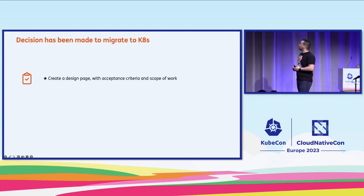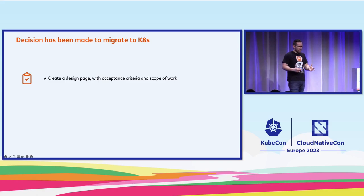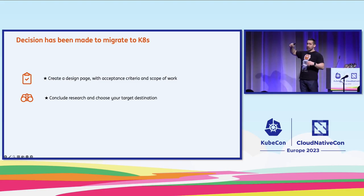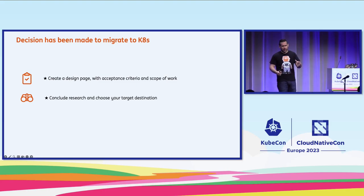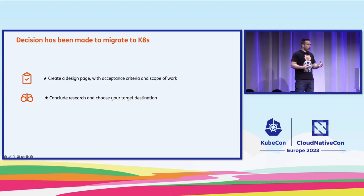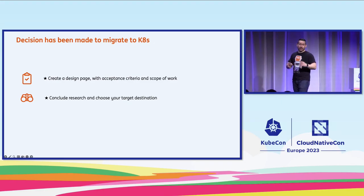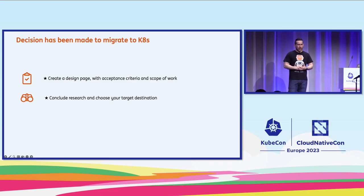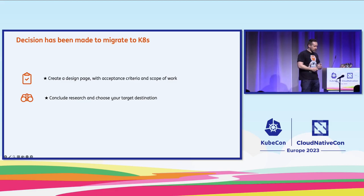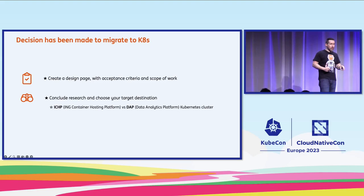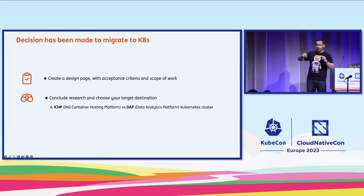Once the decision was made, it was as simple as creating a design page with acceptance criteria and scope of work — what we want, what we don't want, what can be done now, and what can wait. A big part was concluding research on where to migrate. Public cloud was still not an option, so we created an extensive Confluence page comparing both options with a pros and cons list. Options were ICHP, which we'd evaluated before, and a new option called the DAP Kubernetes cluster — now the biggest Kubernetes cluster in ING.